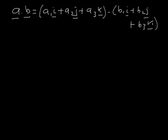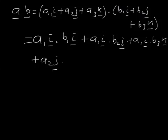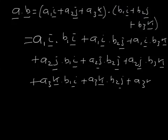Well, a dot b is (a1·i + a2·j + a3·k) dot (b1·i + b2·j + b3·k). So now let's multiply these out — we get terms like a1i dot b1i, and then a2j dot each term, and a3k dot each term, giving a3k dot b2j and a3k dot b3k.